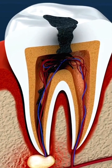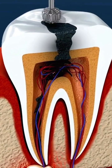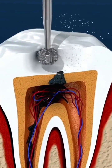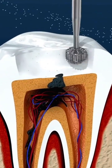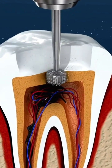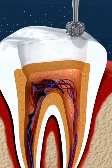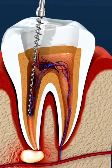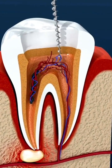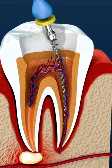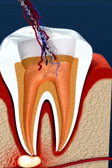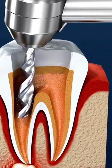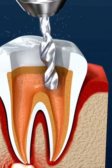What happens during a traditional root canal procedure? The dentist or endodontist removes the infected pulp to clean and treat the inside of the tooth. Before starting, the dentist takes x-rays, gives local anesthesia to numb the area, and places a dental dam to keep the tooth dry.